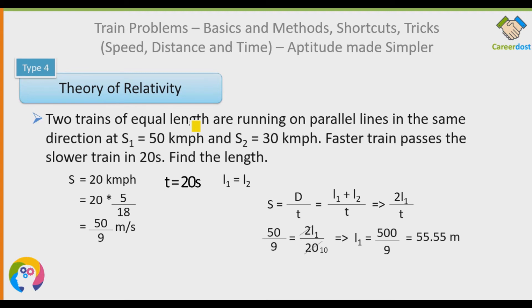To recap that last problem: the trains were of equal length and running in the same direction, so we subtract the speeds. Note that sometimes the exam may ask for the length of the faster or slower train to confuse you — but since both are equal in length, the answer is the same either way. We have now covered all four types of train problems in this video.